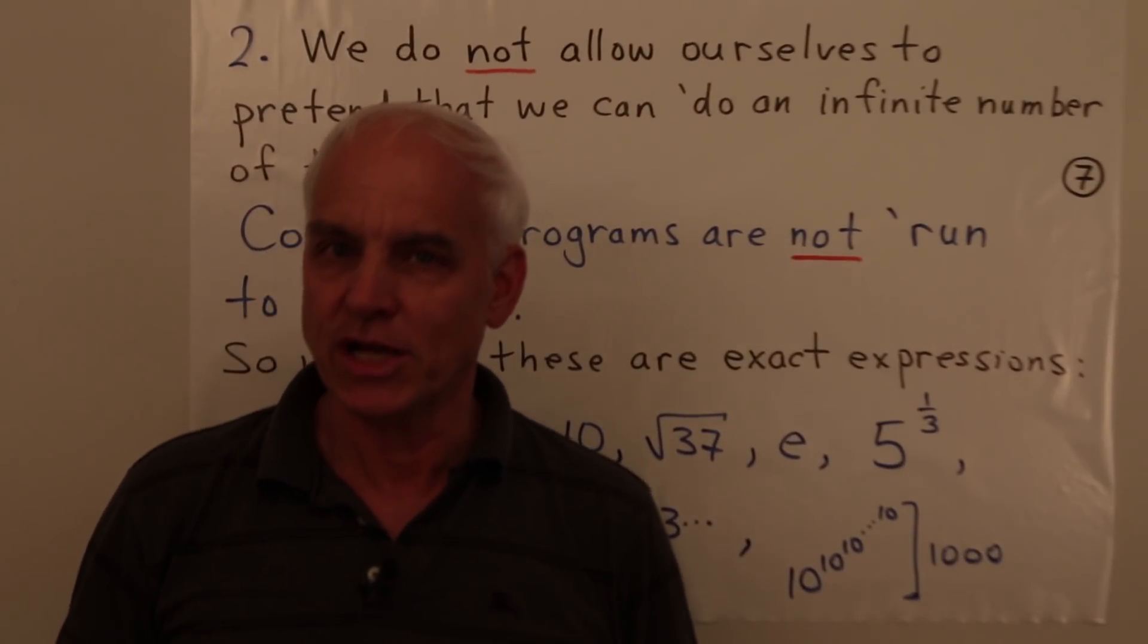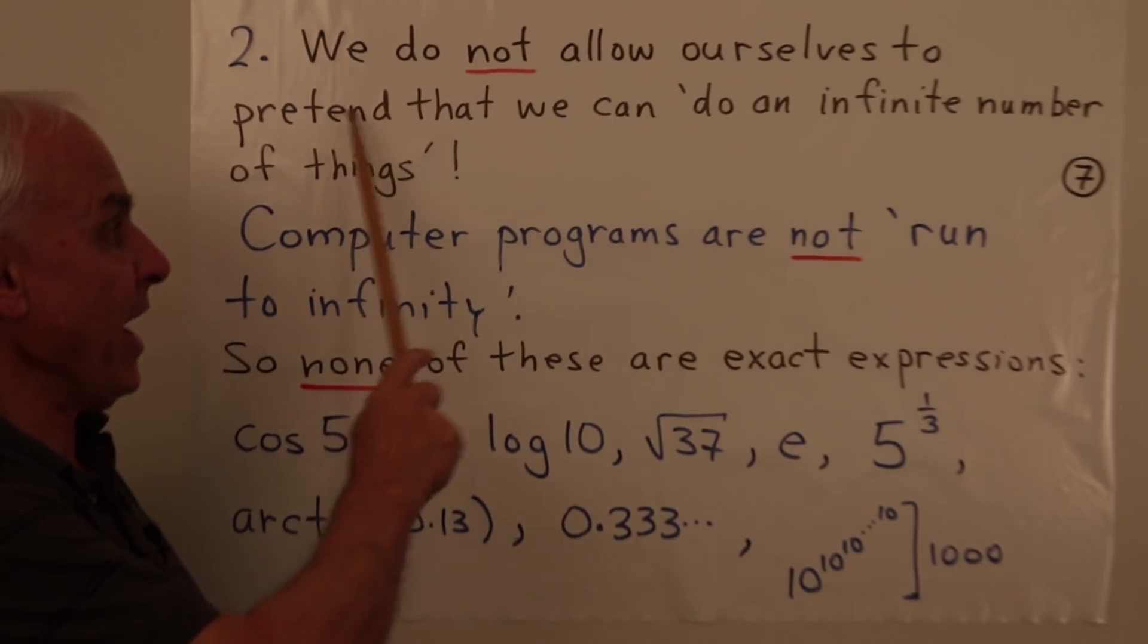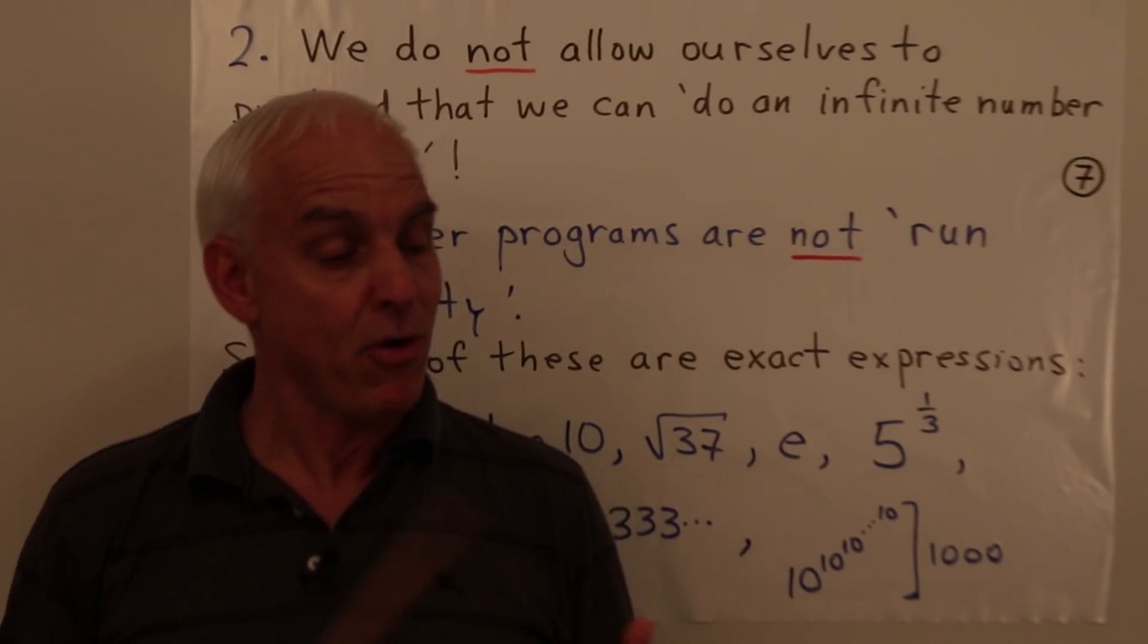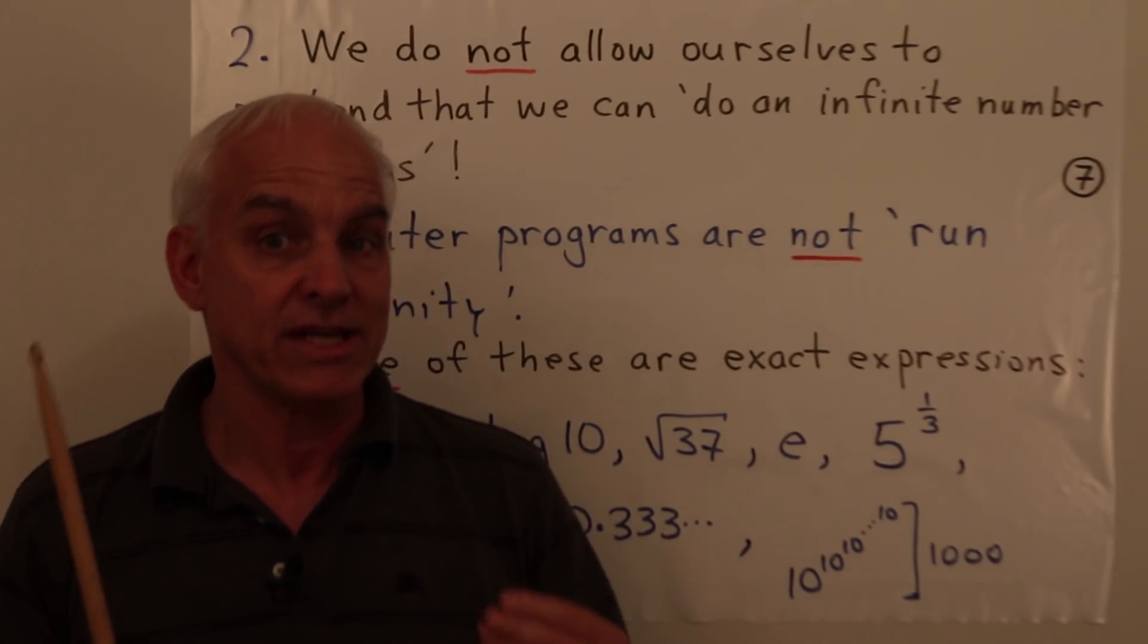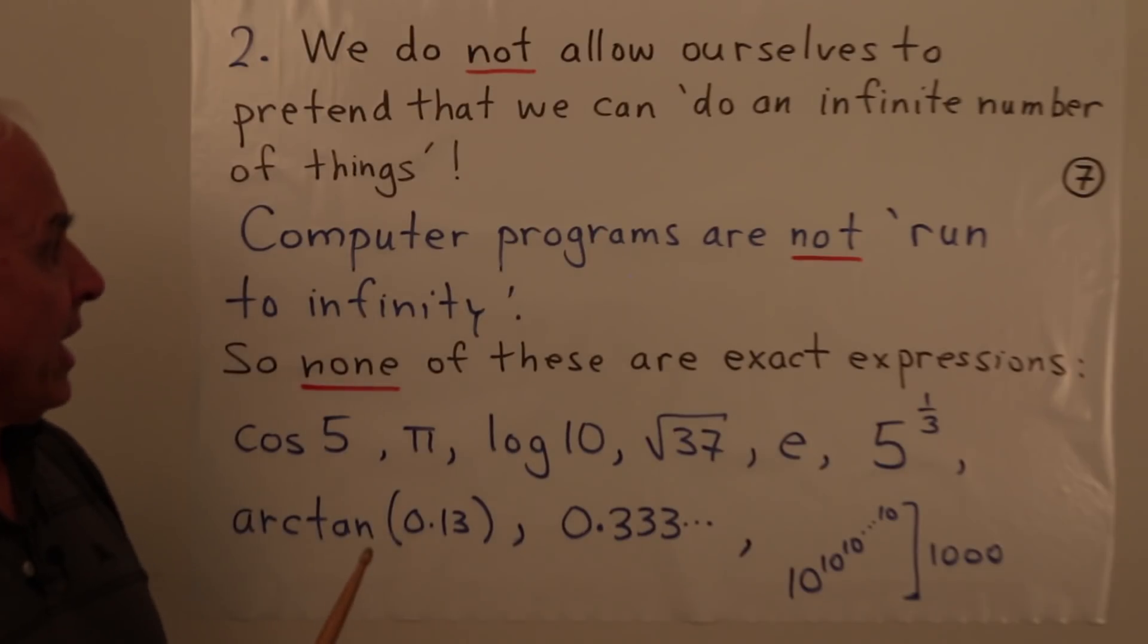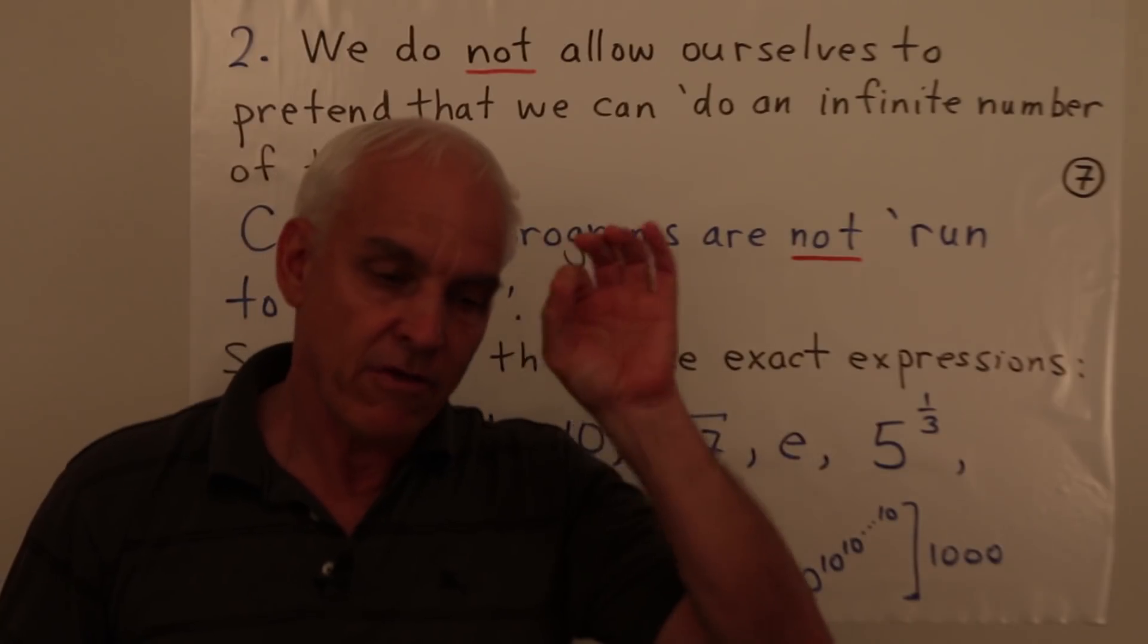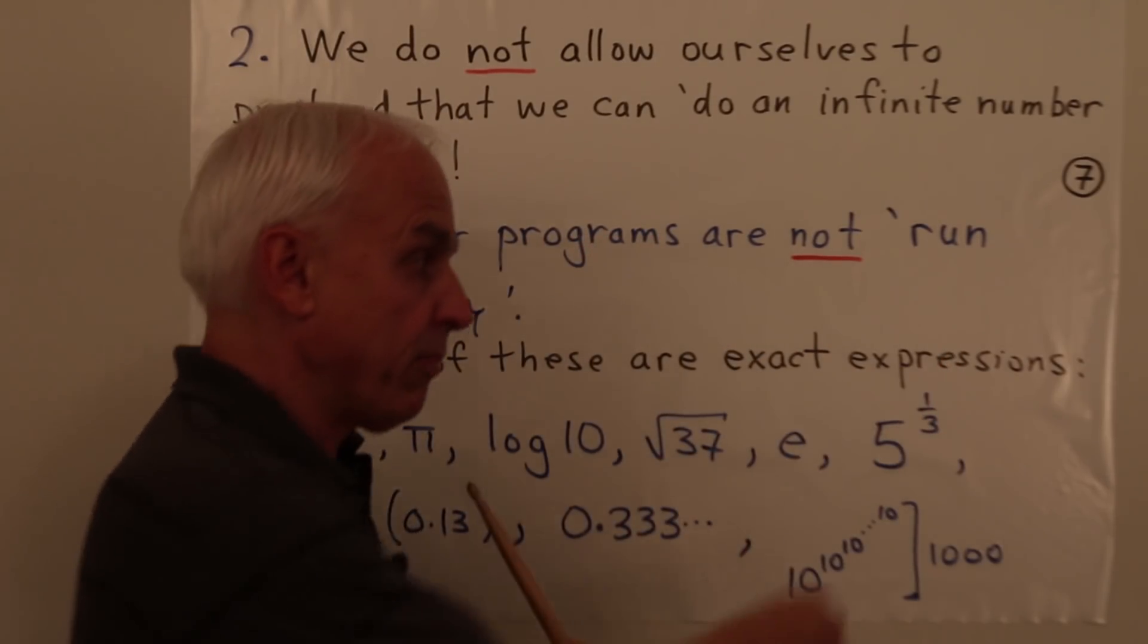Our second orientation is that we are not going to allow ourselves to pretend that we can do an infinite number of things. From my point of view we cannot do an infinite number of things and we're not going to pretend that we can. In other words, computer programs are not run to infinity.